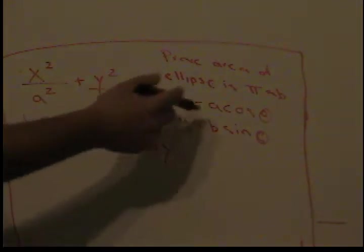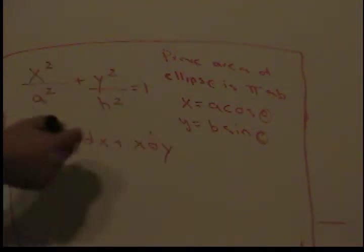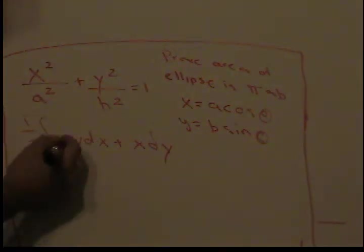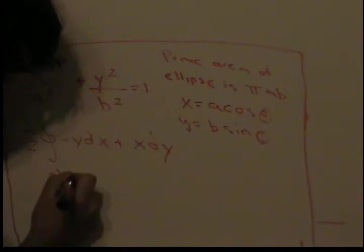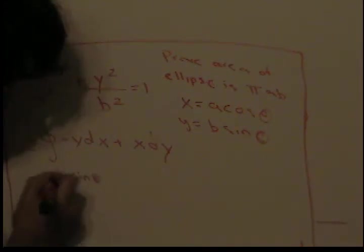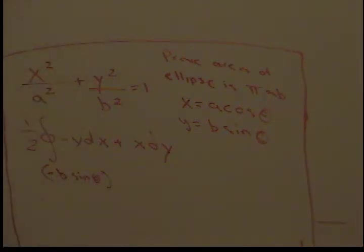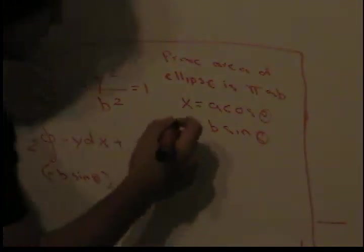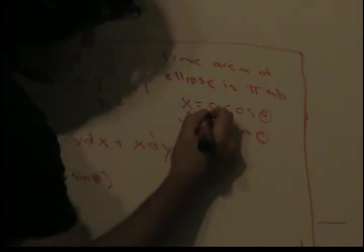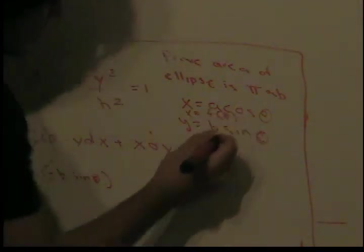Now we're going to apply this to the formula. We have negative y, so negative b*sin(θ). dx means take the derivative of x with respect to θ. Since x is a function of theta, when we do that we get negative a*sin(θ).